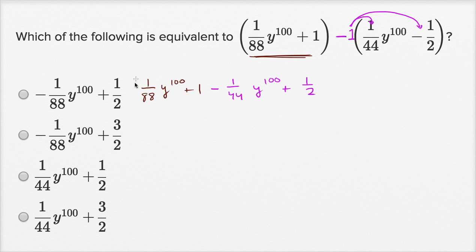So this is 1 88th y to the 100th. This is minus, or you could say negative 1 44th y to the 100th. And so we can add these two terms together. We could write this as 1 over 88 minus 1 over 44, y to the 100th, and then you have plus 1 plus 1 half.